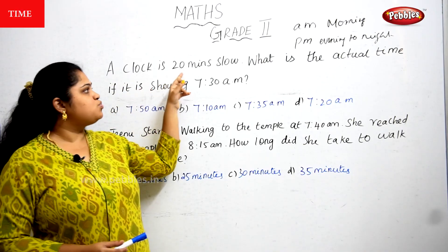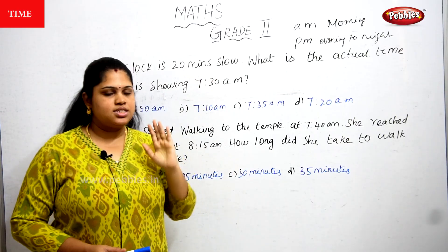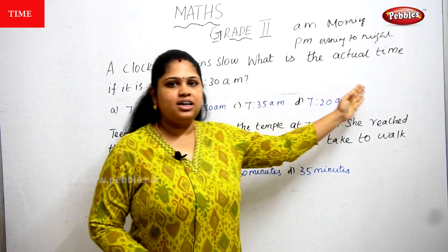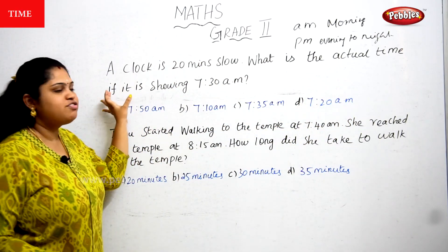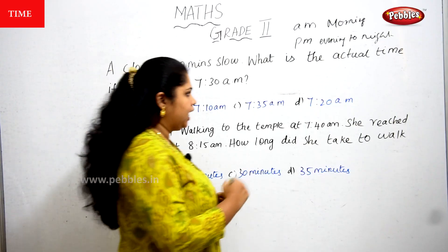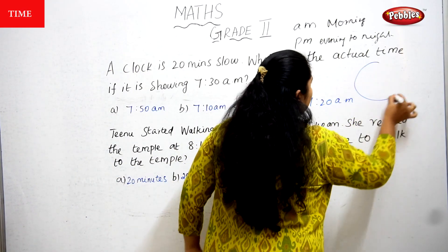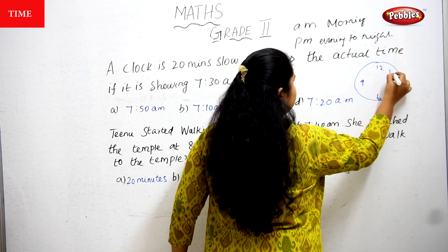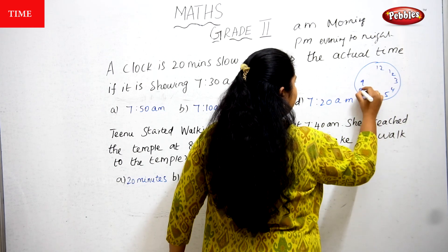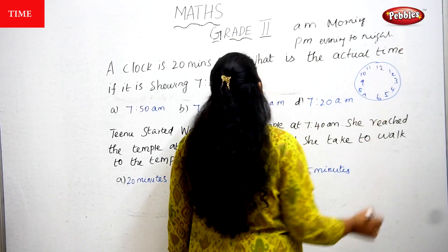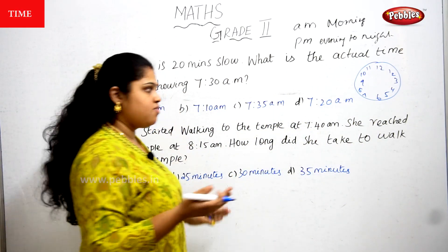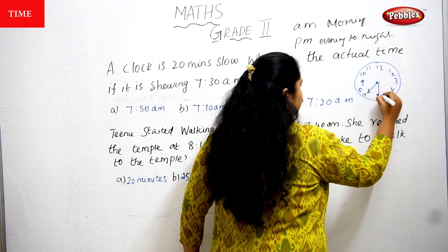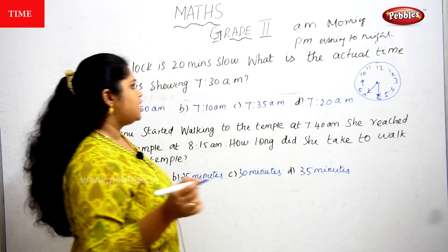Next question: your clock is 20 minutes slow. Just listen carefully — your clock is 20 minutes slow. What is the actual time if it is showing 7:30 AM? Let's draw the clock. So the clock is showing 7:30, meaning the small needle is at 7 and the big needle is at 6.